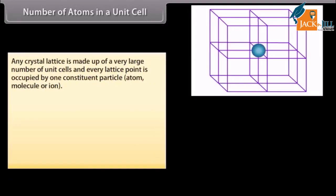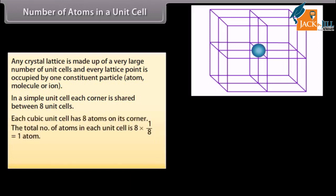Any crystal lattice is made up of a very large number of unit cells, and every lattice point is occupied by one constituent particle — atom, molecule, or ion. In a simple unit cell, each corner is shared between eight unit cells. Each cubic unit cell has eight atoms on its corners, so the total number of atoms per unit cell is 8 × 1/8, which equals one atom.